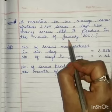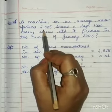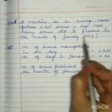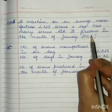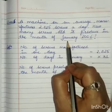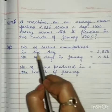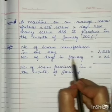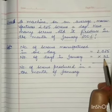Now, here it is asked about the month of January. Number of screws manufactured in one day is given. In the month of January 2006 — this year doesn't matter because in January there are always 31 days. So, number of screws manufactured in one day is 2825, and number of days in January is 31. Number of screws produced in the month of January — we will multiply.